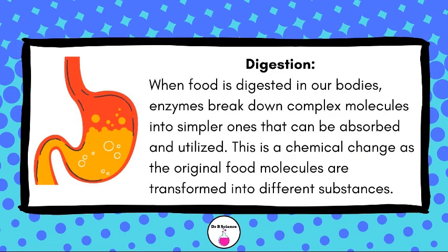Digestion: When food is digested in our bodies, enzymes break down complex molecules into simpler ones that can be absorbed and utilized. This is a chemical change as the original food molecules are transformed into different substances.